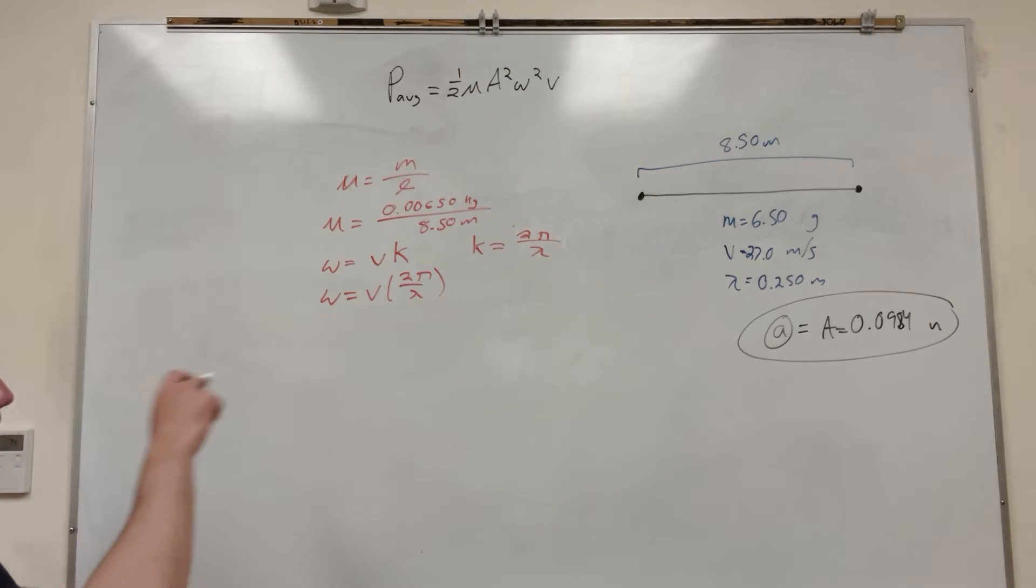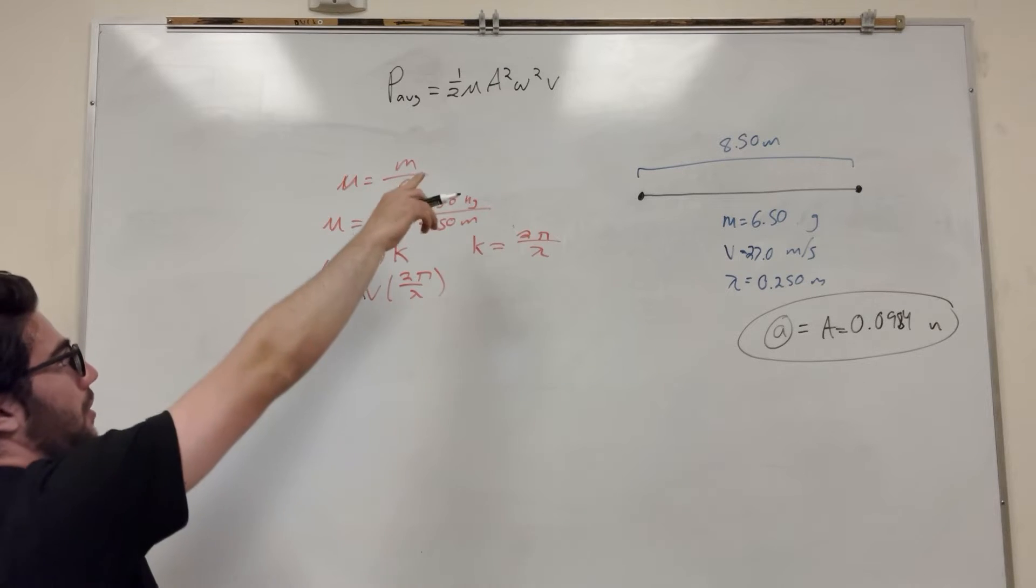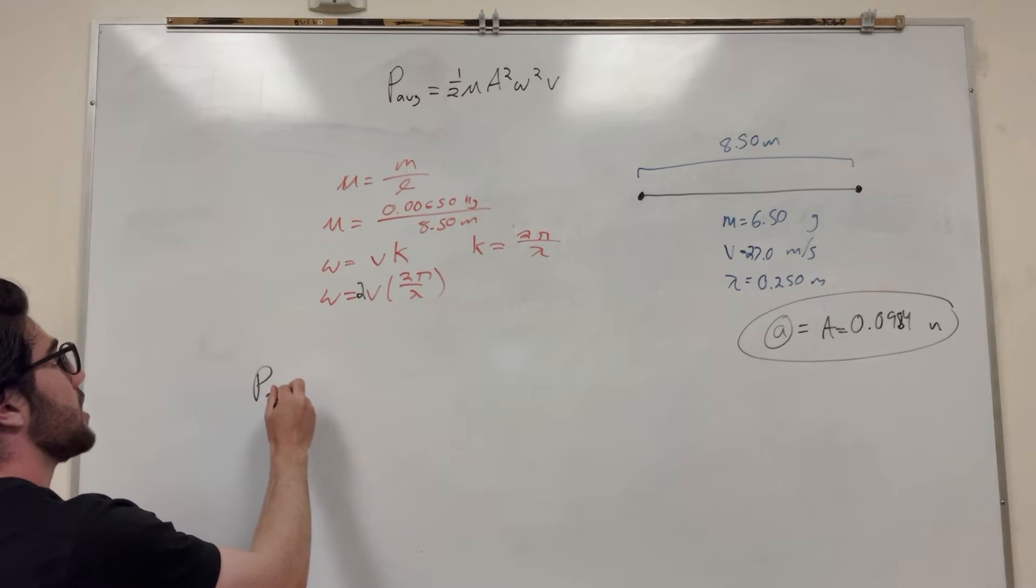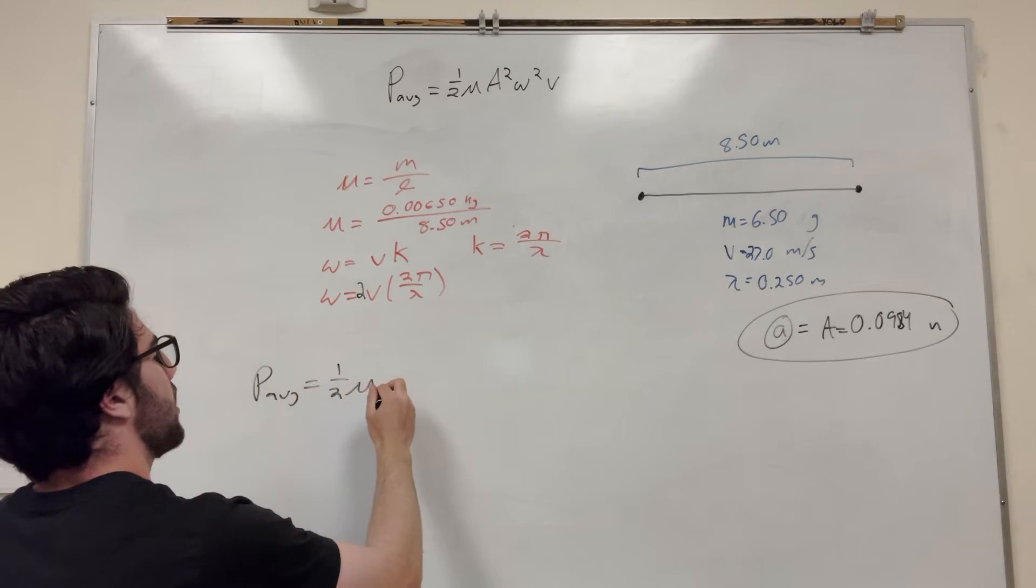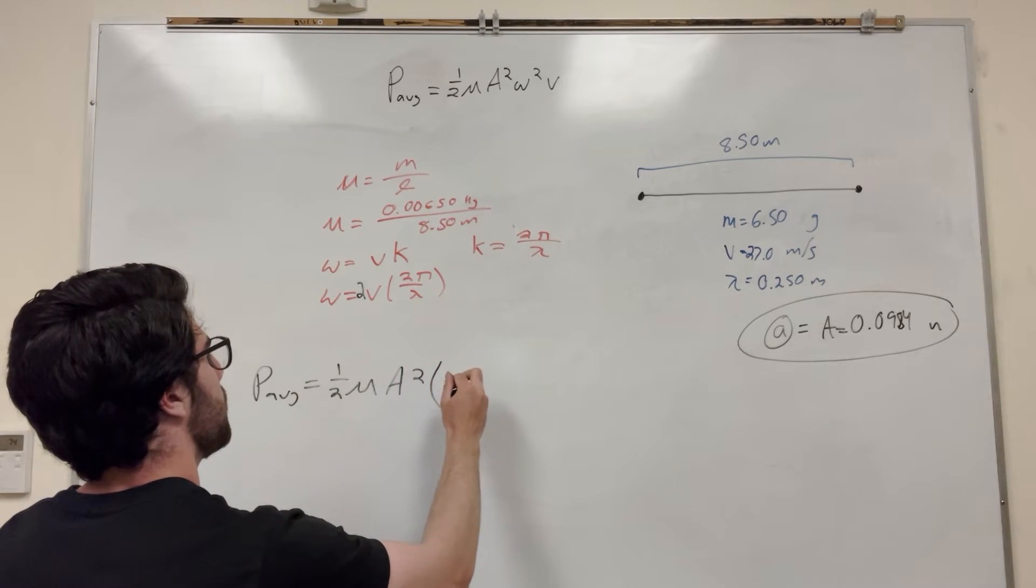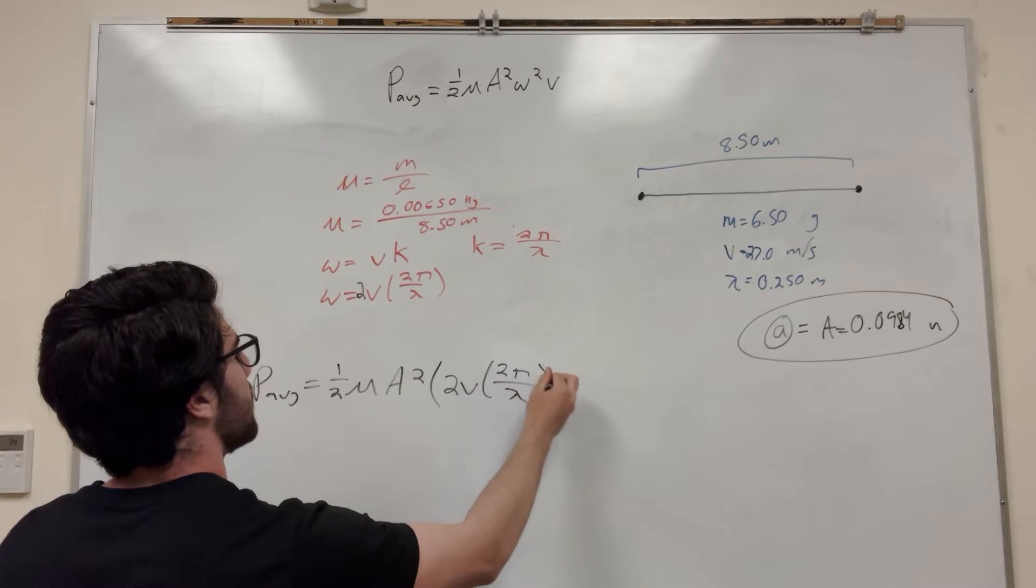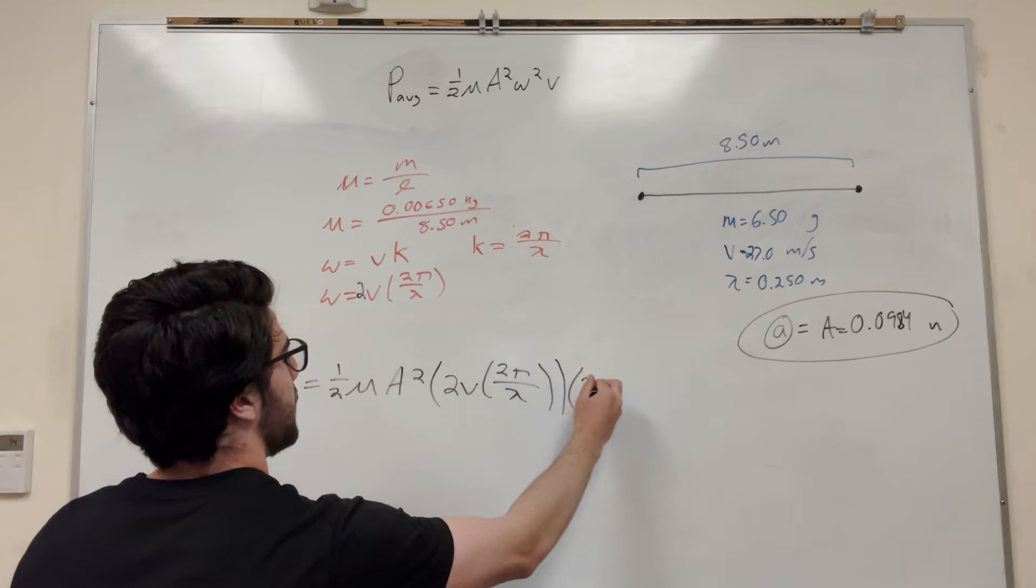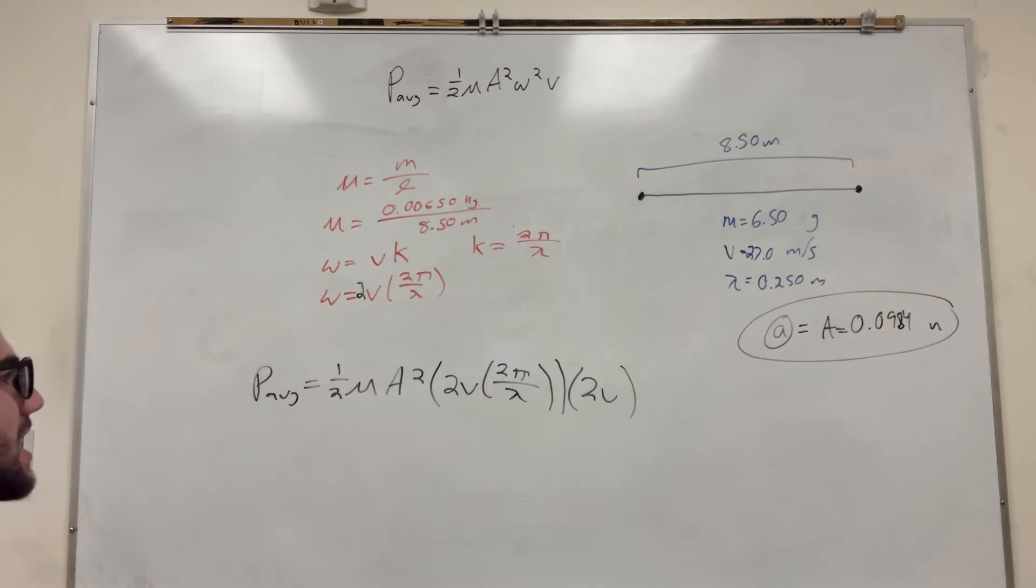So everything—we have a delta V, and we're going to have to double it. So we have a velocity here times 2, and we have a velocity up there. So our new equation is going to be: average power equals 1 half mu A squared, and then W is equal to 2 velocity times 2 pi over lambda, and then times 2V. This is our new equation, and all we have to do is plug it in now.